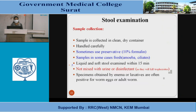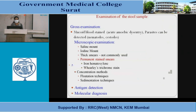Stool examination: the sample is collected in a clean dry container, handled carefully, and sometimes preserved in 10% formalin. Fresh samples are needed in some cases — liquid and soft stools must be examined within 15 minutes, not mixed with urine or disinfectant as they kill trophozoites. Specimens obtained by enema or laxatives are often positive for worm eggs or adult worms. Gross examination reveals mucoid blood-stained stool in acute amoebic dysentery. Microscopic examination includes saline mount, iodine mount, thick smears, permanent stained smears (iron hematoxylin, trichrome), and concentration methods such as flotation and sedimentation. Antigen detection and molecular diagnosis can also be done.